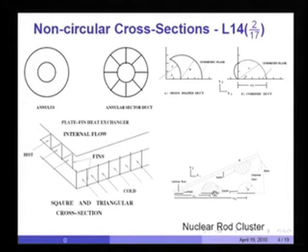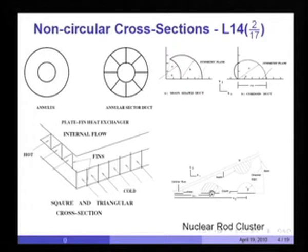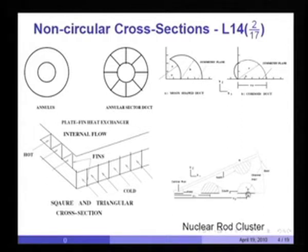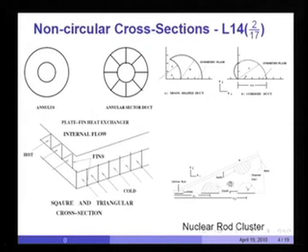In nuclear rod clusters in a circular shell, there are a large number of rods — one rod in the center, several rods in the first rod ring, then another set in the second rod ring, and so on. It may go like 1, 6, and 12 in the outer ring making 19 rods. The flow takes place in the interspace between the rods — you can see how complex the flow cross section is. It is a very good example of a complex shaped duct encountered in nuclear reactors.